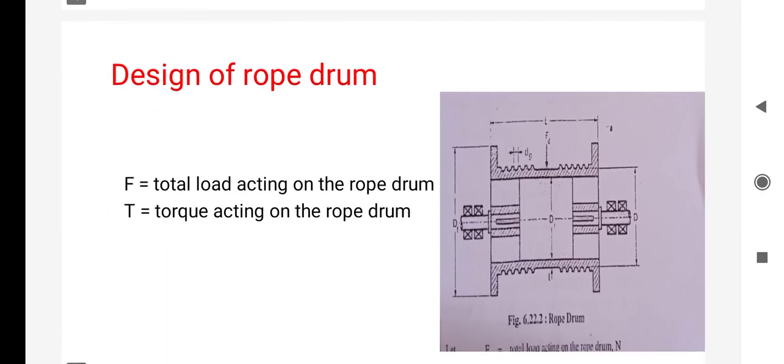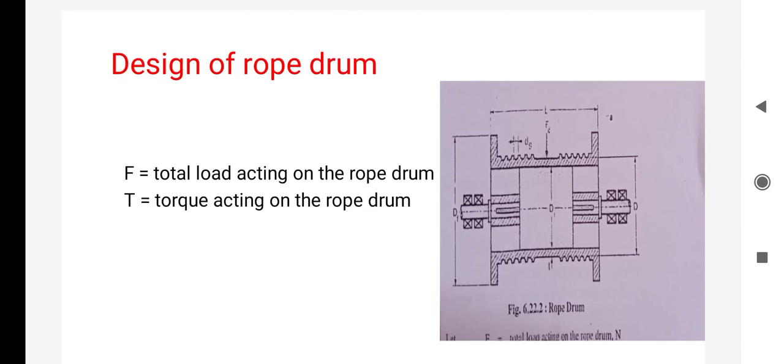In the figure, F is the total load acting on the rope, and T is the torque acting on the rope. When we study design, we have to keep something in mind: stresses and factor of safety. These two things are most important regarding the design of any object.